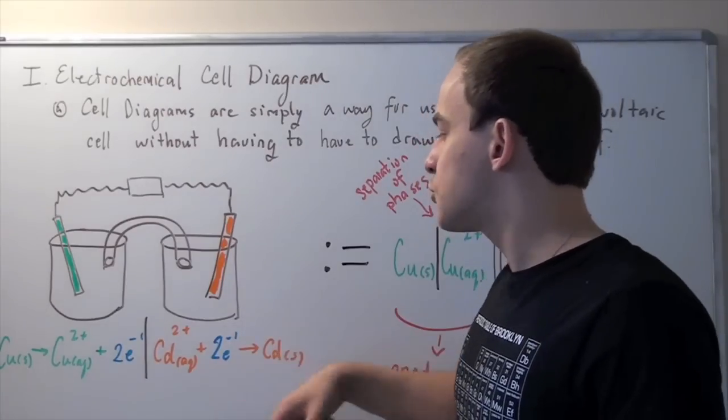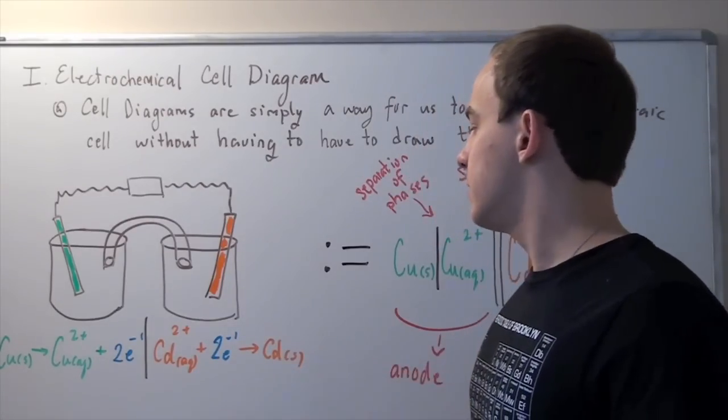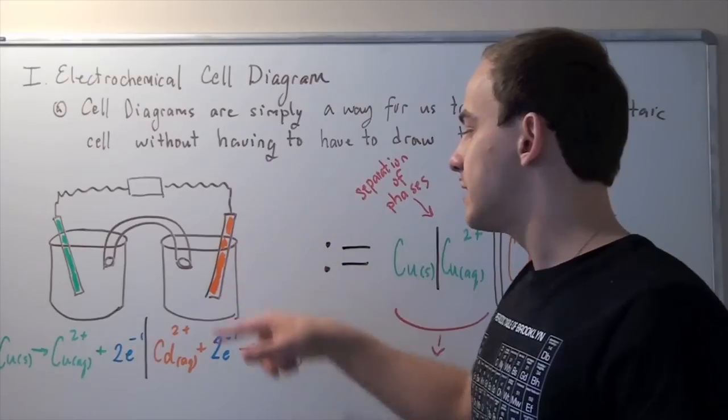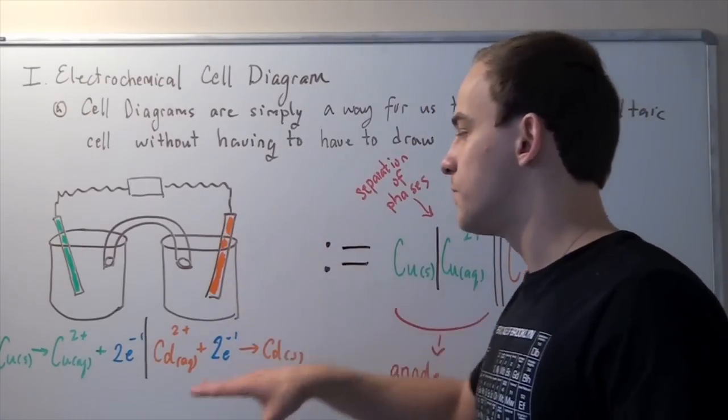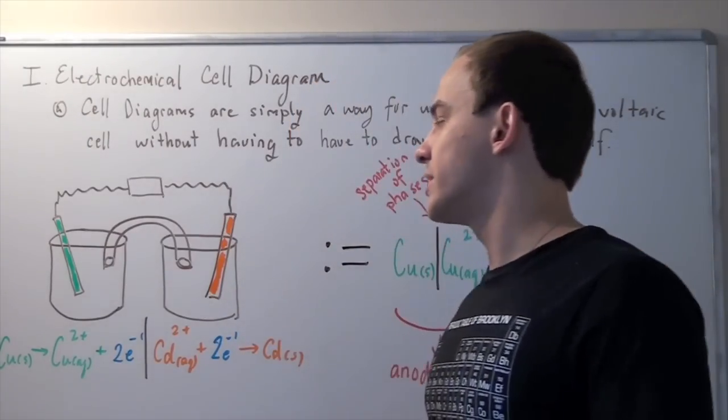The electrons react with our aqueous cadmium, forming solid cadmium. So reduction occurs in the cathode, and oxidation occurs in the anode.